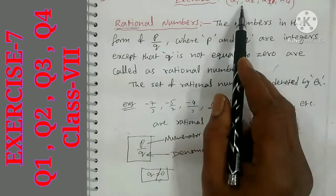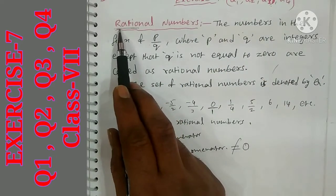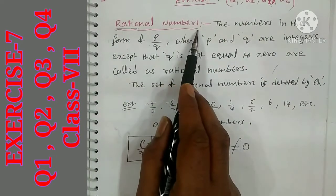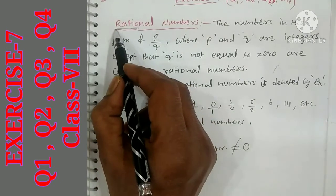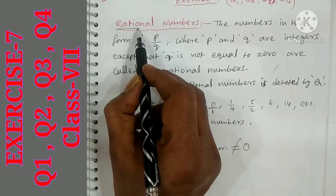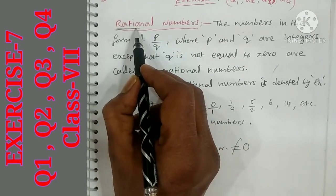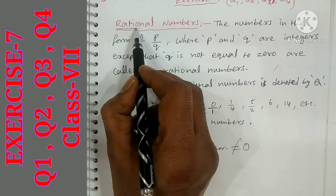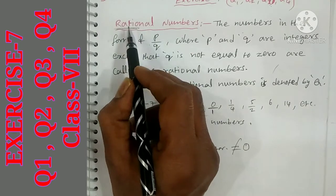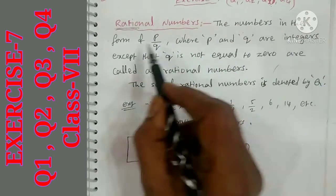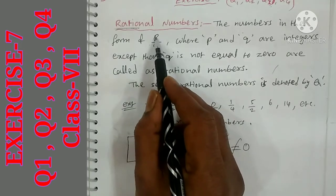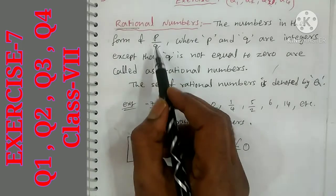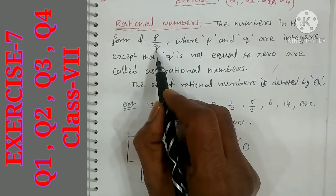Before that I want to explain about the rational number definition. Rational number means it is a ratio. Ratio means it has a numerator and denominator. A number is in the form of P by Q, where P is the numerator and Q is the denominator.